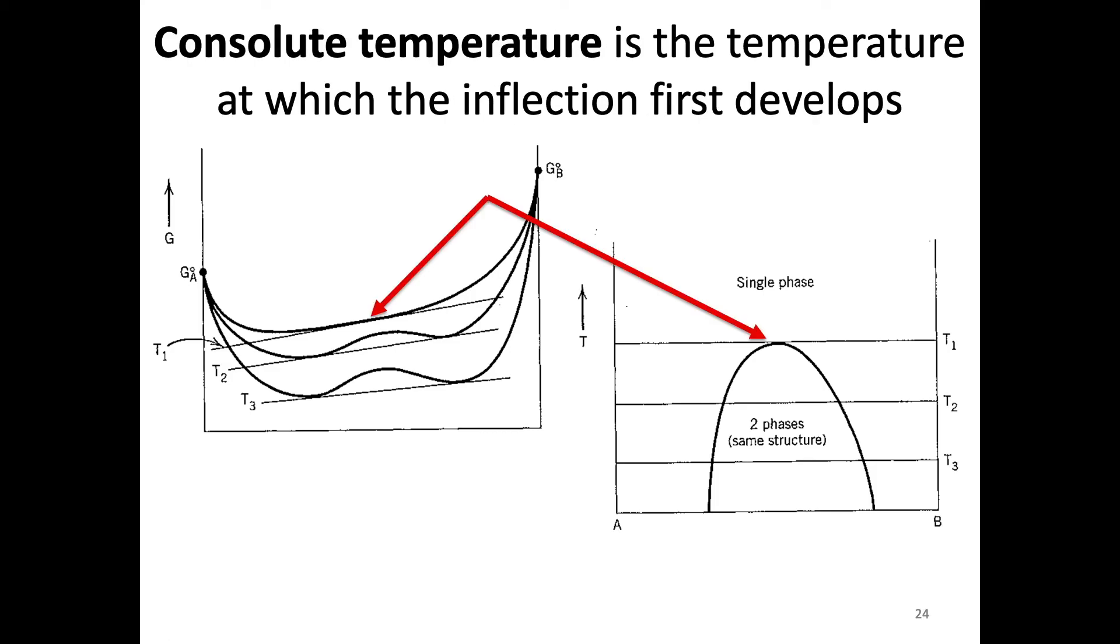A couple of notes about nomenclature here. Right where that inflection develops, in this case it would be T1, right where that gap here, this dome develops, that's known as the consulate temperature. This is where the inflection first develops. That's just a thing to keep in mind when we're looking at that.